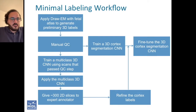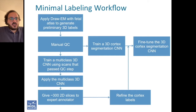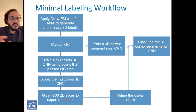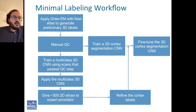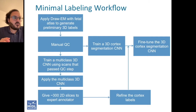We first apply an algorithm called Draw-EM, which was developed by one of our colleagues for neonatal imaging. We then apply it on fetal data to generate 3D weak labels, using a fetal atlas to generate those preliminary labels within the Draw-EM algorithm. This is then followed by a manual QC step to make sure that we only include scans that were segmented well.